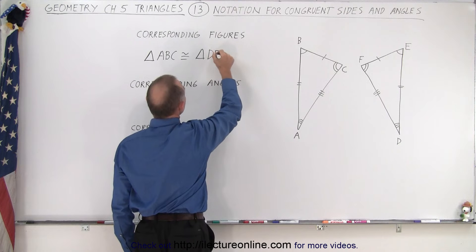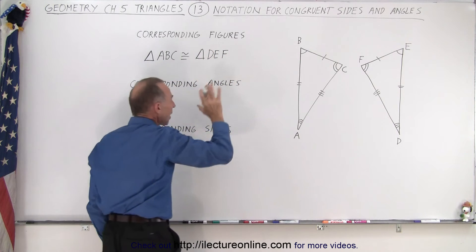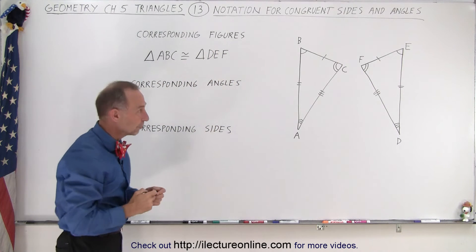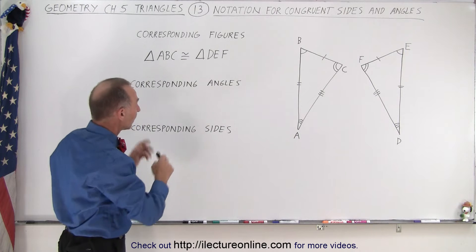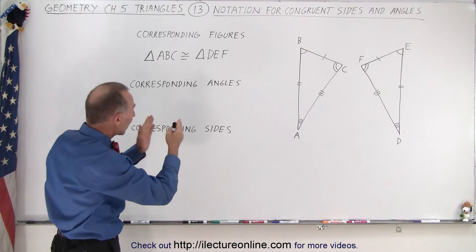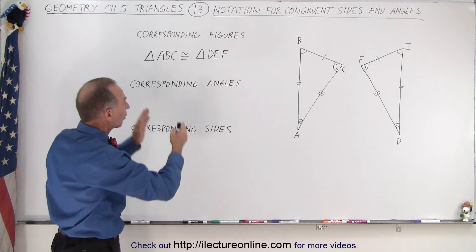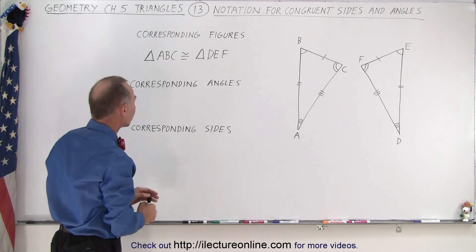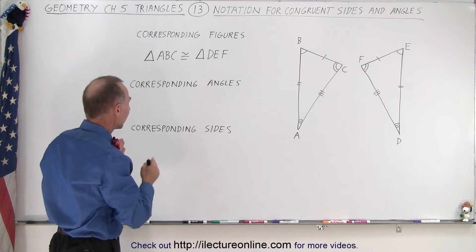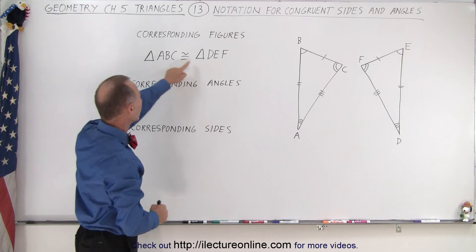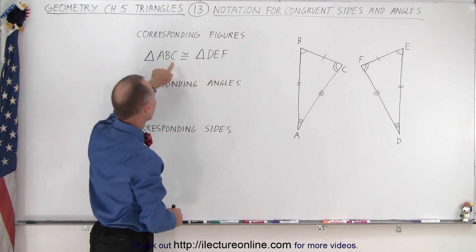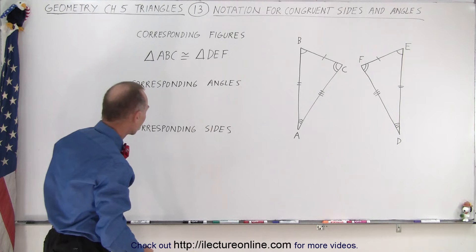D, E, F — that is the proper way of writing that they're congruent, by keeping the same order as far as the congruent angles. A is congruent to D, B is congruent to E, and C is congruent to F.